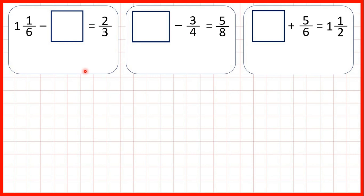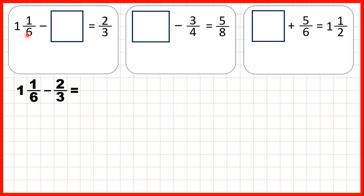Here we've got some missing fraction problems, but we solve these in the same way that we solve missing number problems with whole numbers. So first, 1 and 1 sixth minus something equals 2 thirds. Here it's the subtrahend, or the second number of the subtraction question, that's missing, so we still use subtraction to find our missing number. We can work out 1 and 1 sixth minus 2 thirds and that will give us our missing fraction.